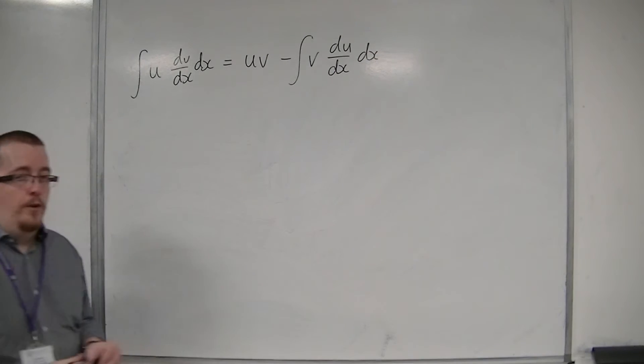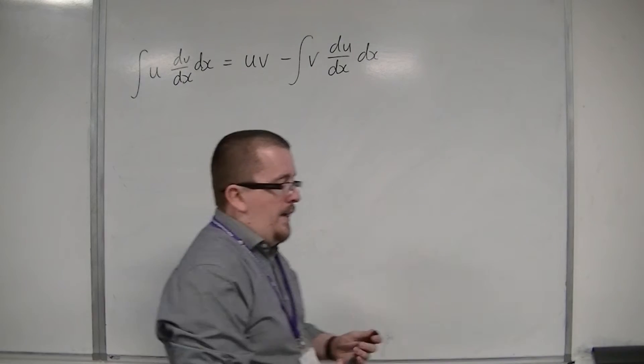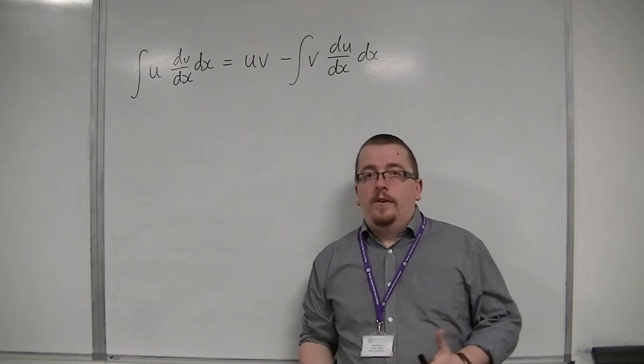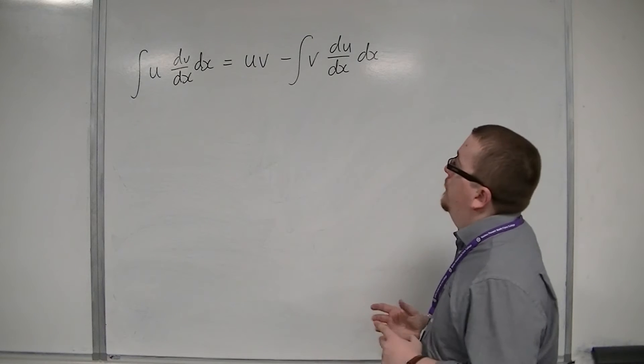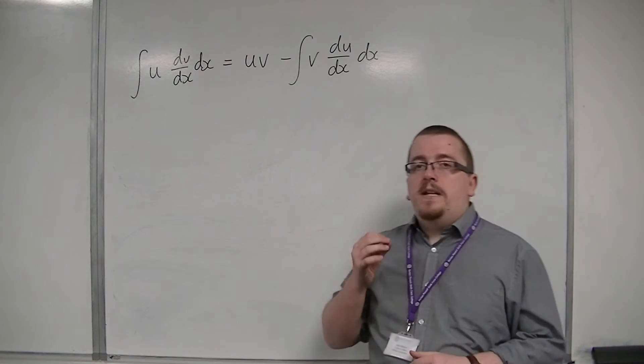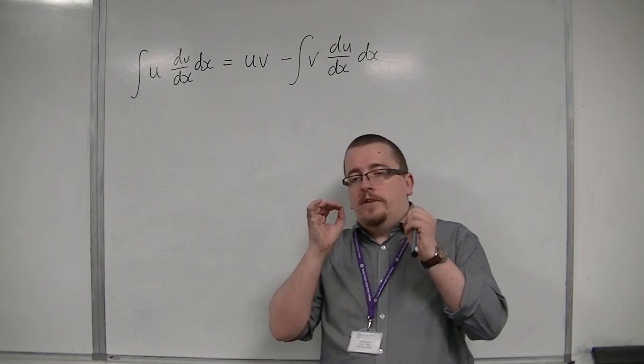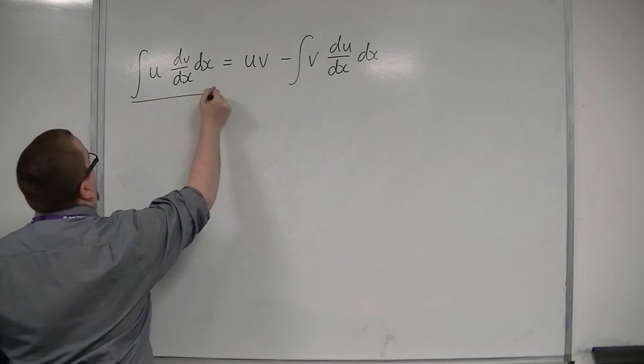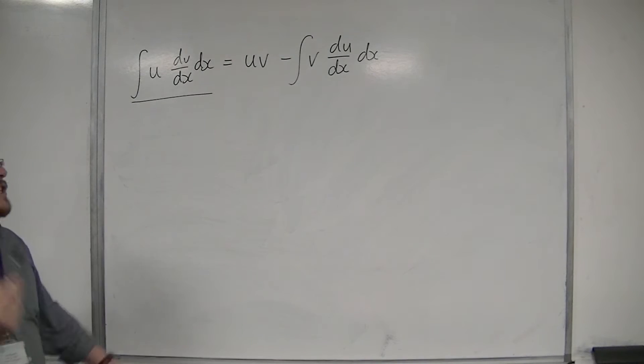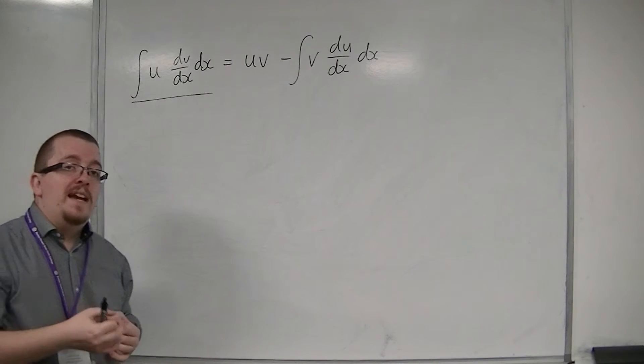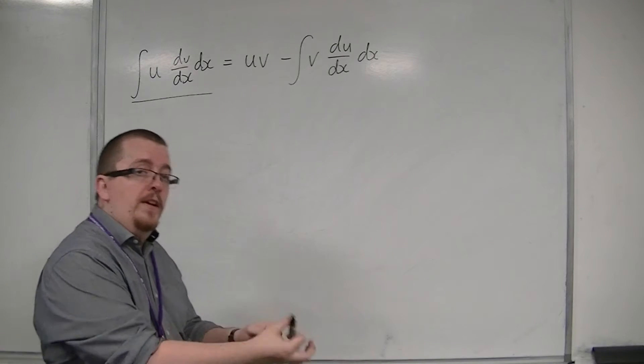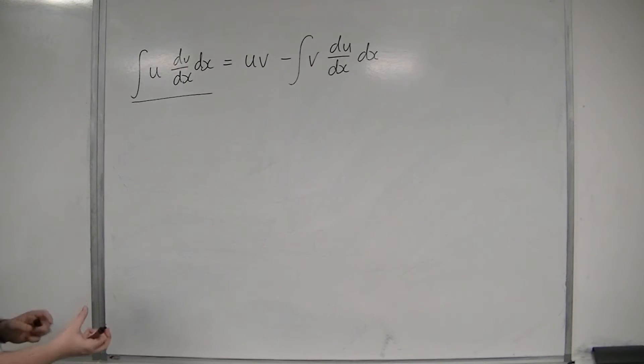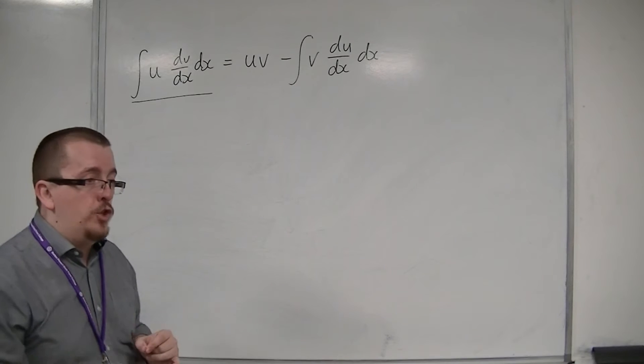Now, this looks like an absolute mess of letters when you first meet the formula. What we need to be clear on is that your question will be in this format. So, u times dv by dx. There's going to be these two parts, the u and the dv by dx, that we need to identify which is which.